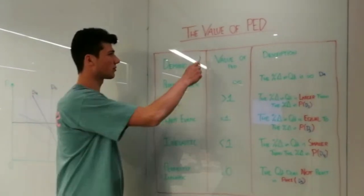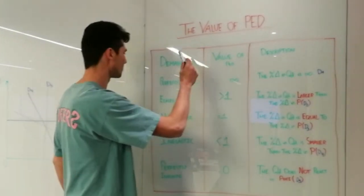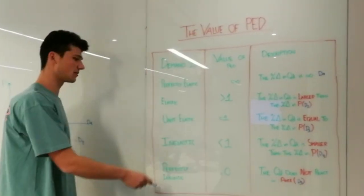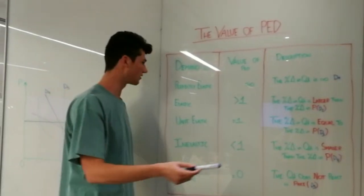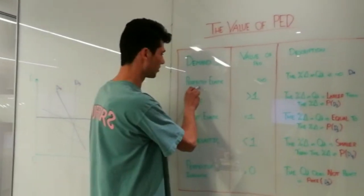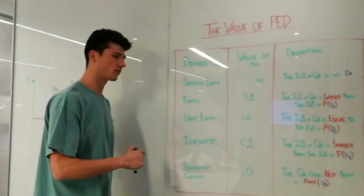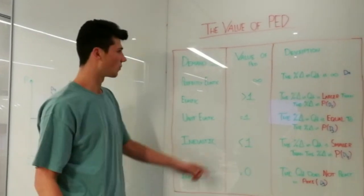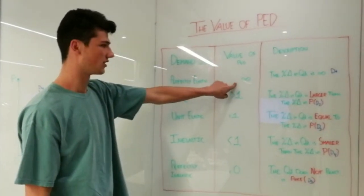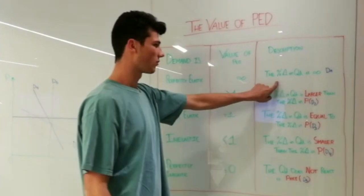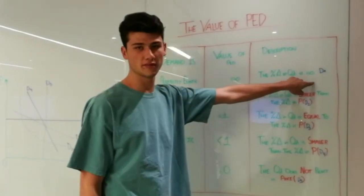Now I'm going to explain the value of the price elasticity of demand. There are five types of elasticity within the price elasticity of demand. First, we're going to start with when a function is perfectly elastic. The value of the price elasticity of demand is infinite, so the percentage change in quantity demanded is always going to be infinite.